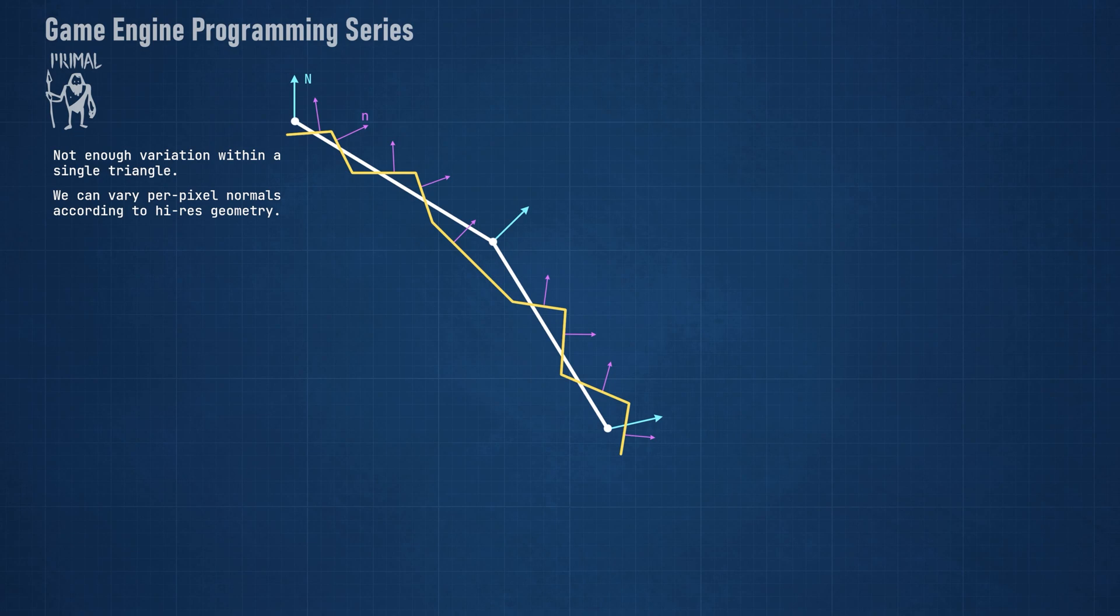Fortunately, there is a method for recording normals at each pixel in each triangle. If the 3D mesh has a UV set for texturing, then we could use a texture that contains vectors instead of colors and we could sample the normal vectors from the texture, which is called a normal map.